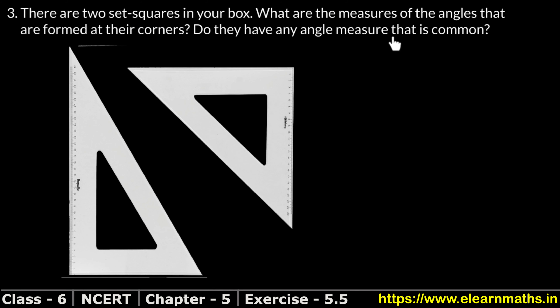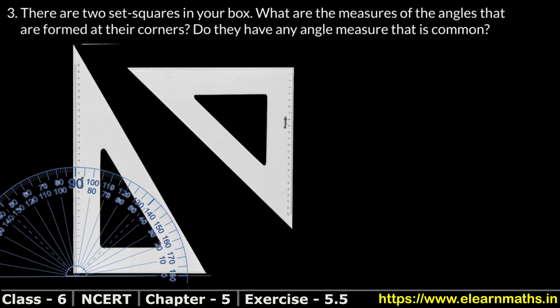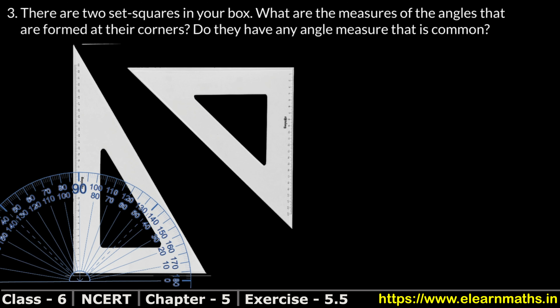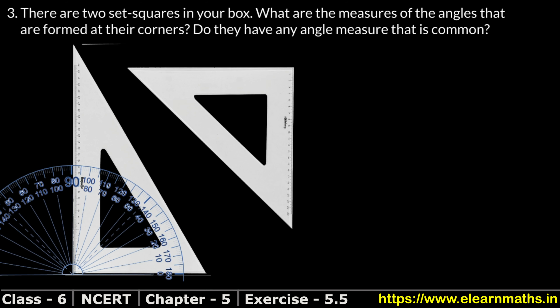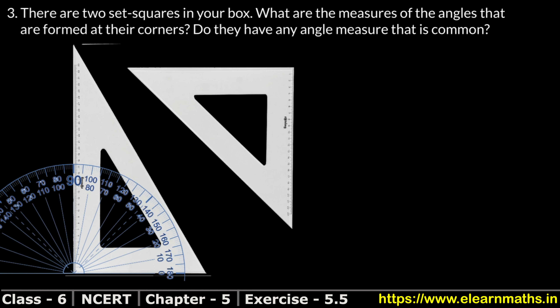Do they have any angle measure that is common? So let's take our protractor and see. We put this arrow in the corner, and it is zero degrees on this side. This is exactly 90 degrees. So we have to know that this angle is made of 90 degrees.